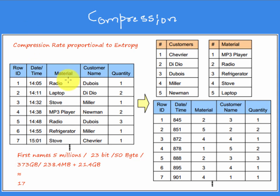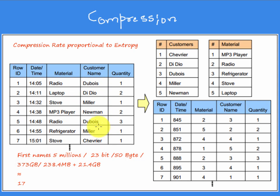What we have to observe is that the material values are repeated — for example, 'radio' appears here and then again here. Similarly, the customer names are repeated as well — for example, 'Dubois' is repeated, and 'Miller' is repeated. The quantity values will also be repeated over time. So the idea is very simple: let's remove the repetition.